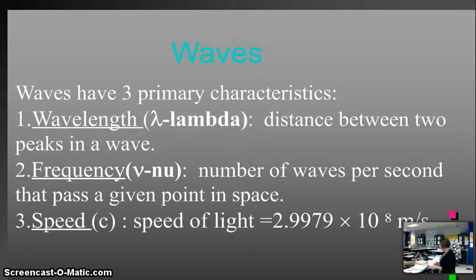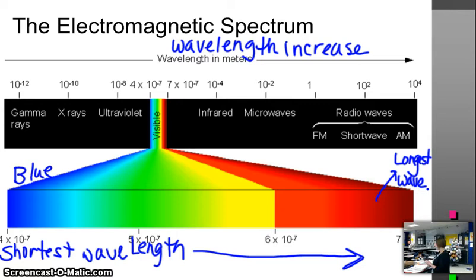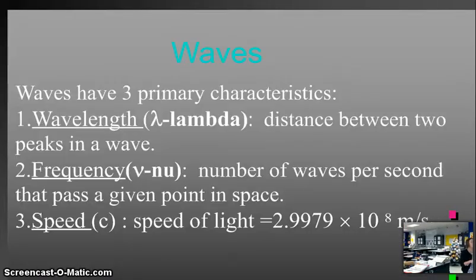When we talk about electromagnetic radiation, even though all of these forms that you just saw here are very different, they all have three common characteristics. The first is that they exhibit wave-like behavior. Number two, they travel at the speed of light when they're in a vacuum. Number three, they have what we call a frequency. Let's talk about what those characteristics are.